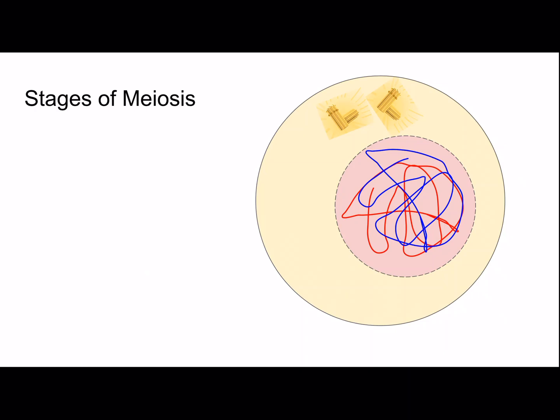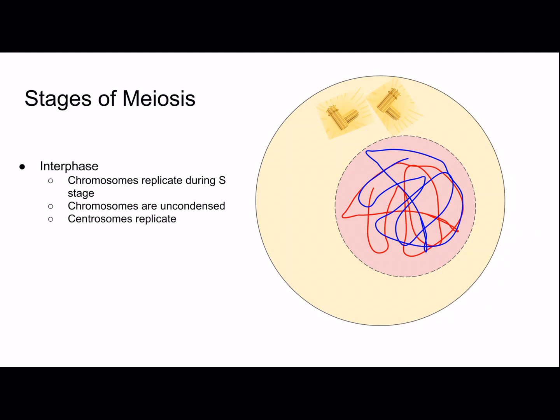Now for more detail, let's start with interphase, where the chromosomes will replicate during the S stage. The chromosomes are uncondensed — in chromatin form — and the centrosomes replicate. Centrosomes are important for organizing spindle fibers in cell division, which help move chromosomes from one side of the cell to the other.